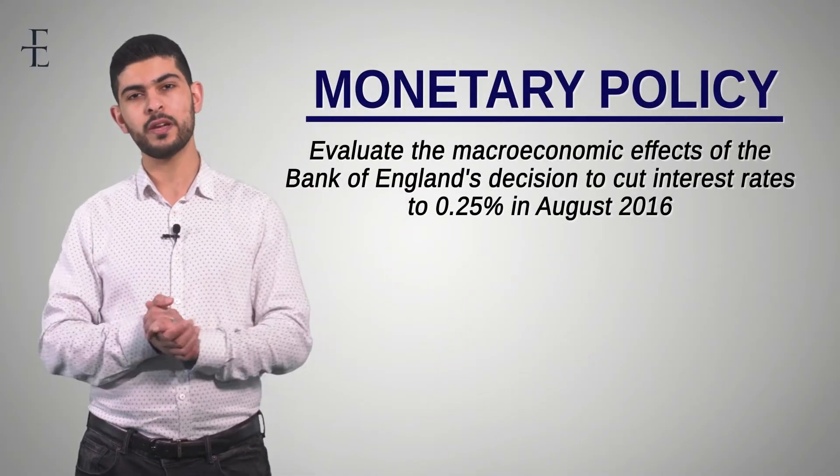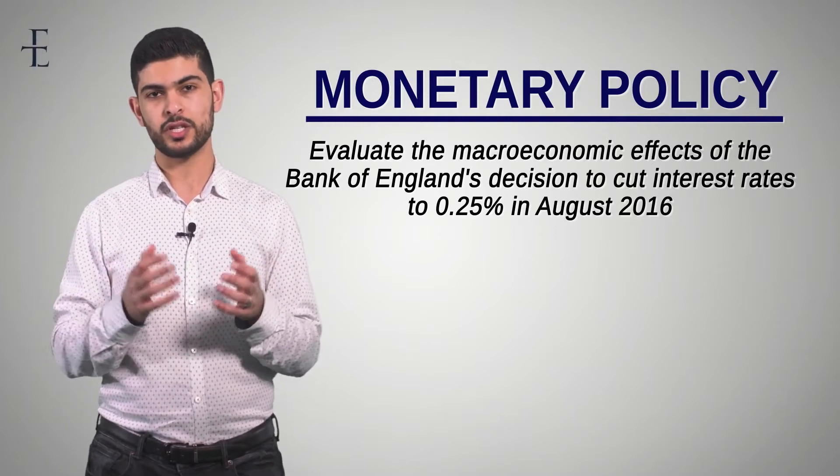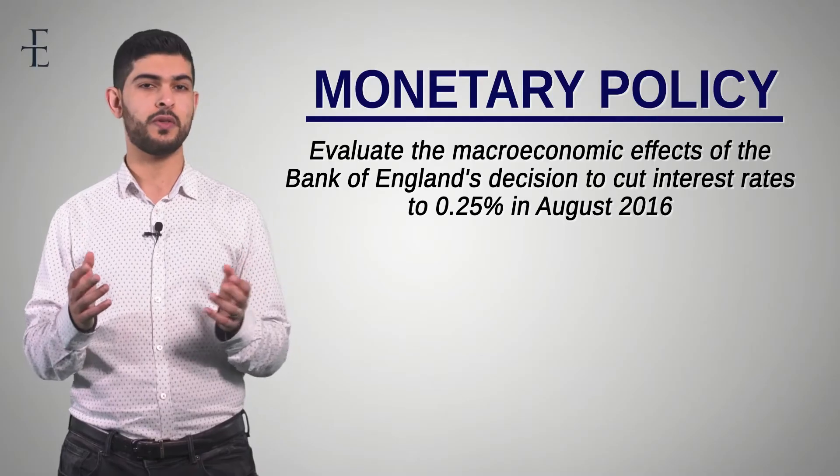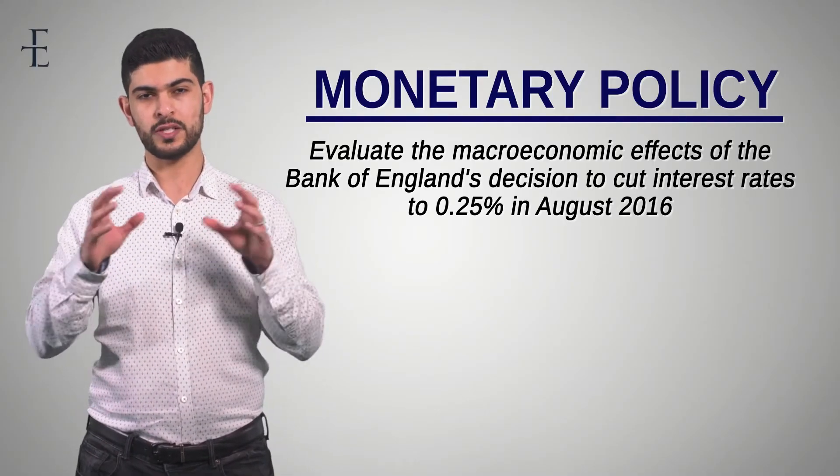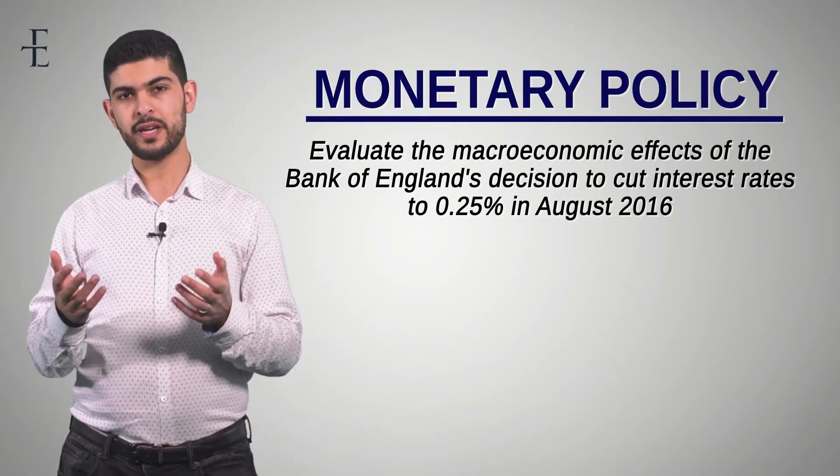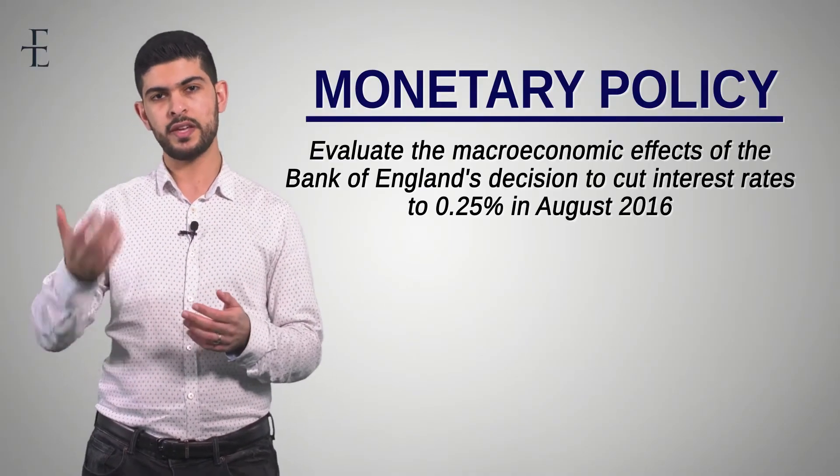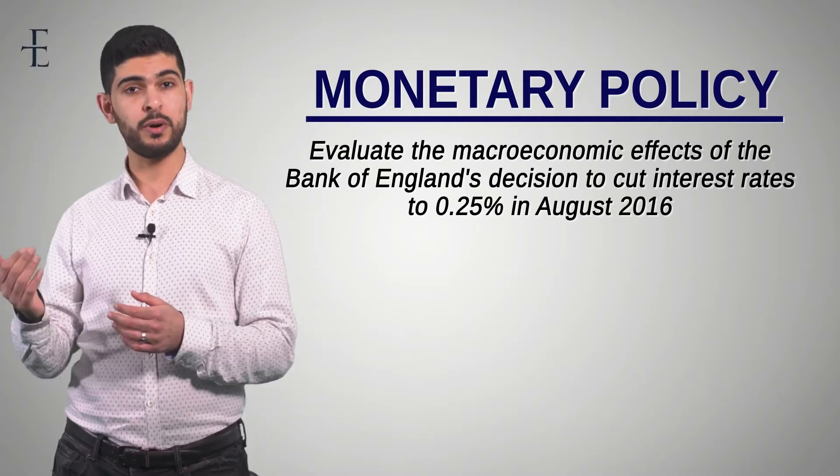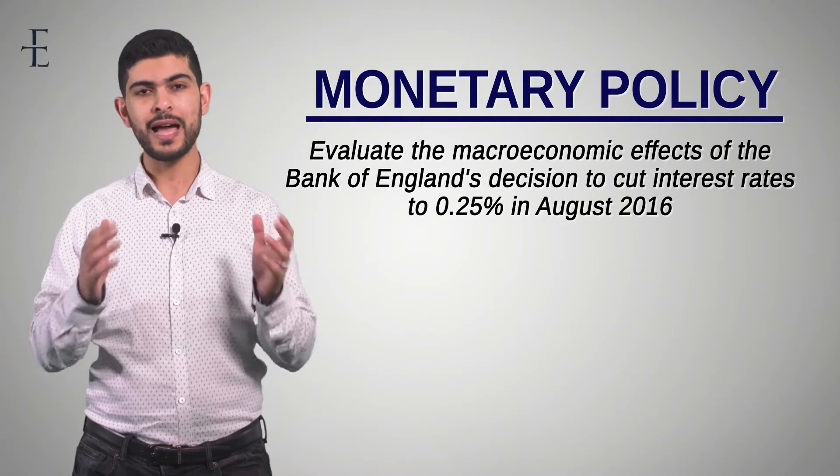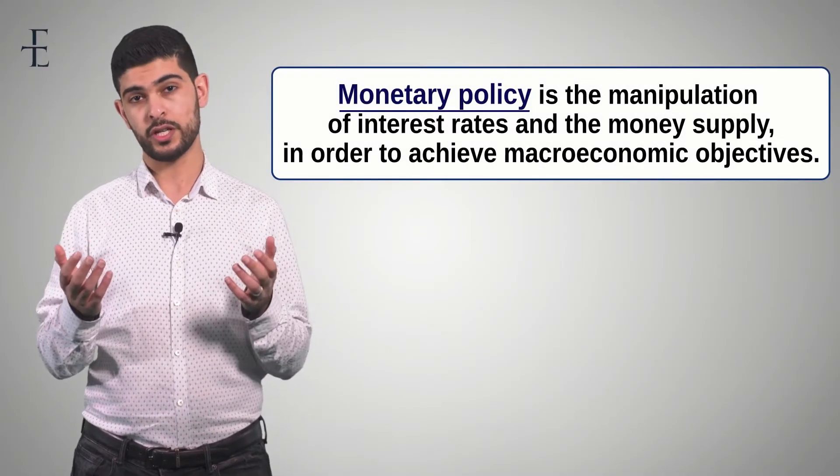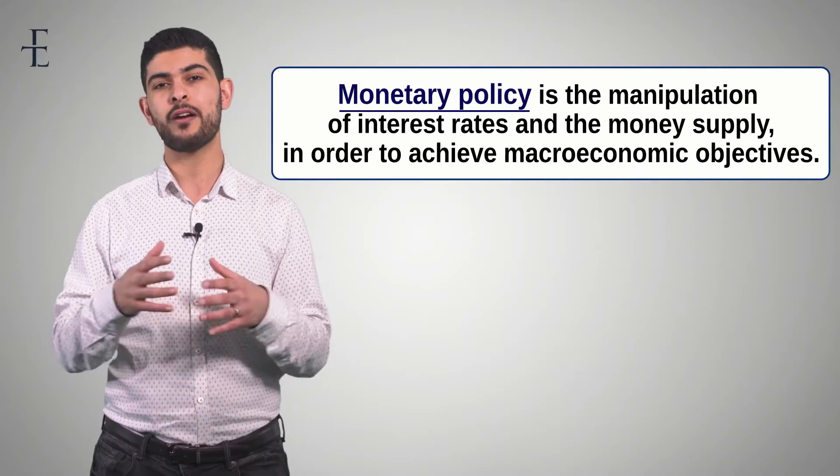Now I'd like us to go through an essay. So the essay I'd like us to write down is as follows: Evaluate the macroeconomic effects of the Bank of England decision to cut interest rates to 0.25% in August 2016. Now, if you ever look at the mark scheme, it always has this concept known as a transmission mechanism. The transmission mechanism is just a fancy way of them saying, does the candidate go through the different components of aggregate demand? The definition of monetary policy could be something along the lines of: monetary policy is the manipulation of interest rates and the money supply in order to achieve macroeconomic objectives.